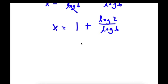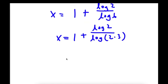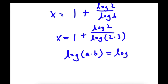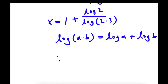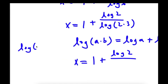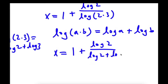Now log 6 I can rewrite as log 2 times 3. And remember, if we have something in the form log a times b, this is equal to log a plus log b. So we have x equals 1 plus log 2 over log 2 times 3, which equals log 2 plus log 3. So I have log 2 plus log 3 in the denominator.